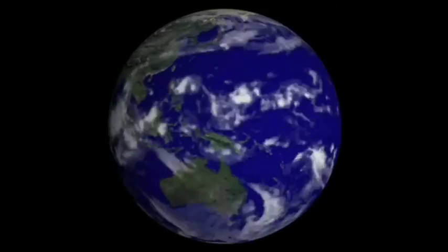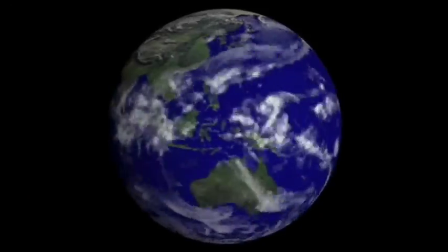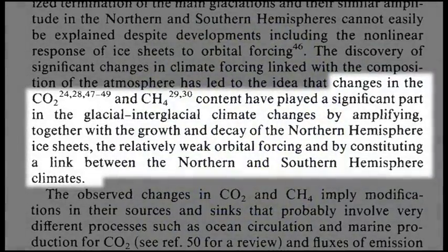But how could changes taking place primarily in the northern hemisphere be spread over the whole planet? The missing link, they said, was the increased warming of water and soils releasing greenhouse gases, CO2 and methane.